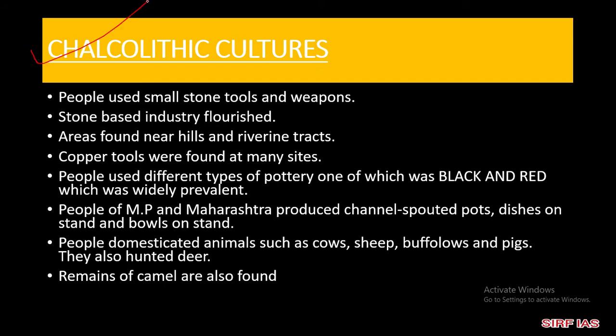अब Chalcolithic culture में क्या होता था — उसमें बात करते हैं। लोग उस समय छोटे-छोटे small stone tools को use करते थे, weapons को use करते थे। Stone-based industry काफी ज़्यादा flourish हुई उसमें। जो areas हैं वो hills और river tracks के पास, नदी-वदी के पास — इस culture का वहीं पे ज़्यादा होता था, चूँकि यह stone पे based था।